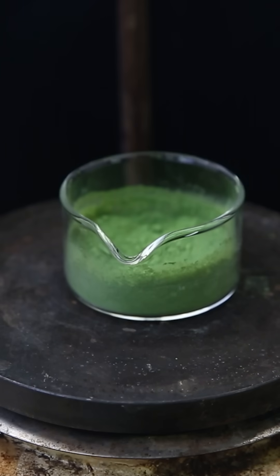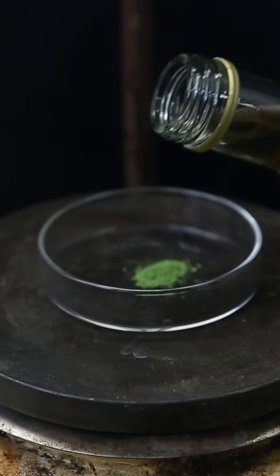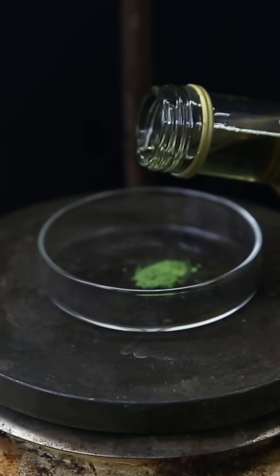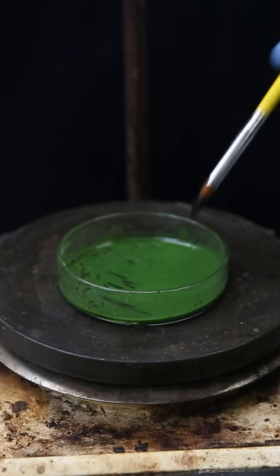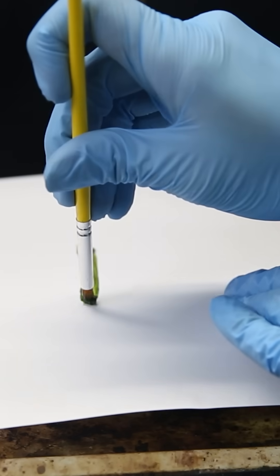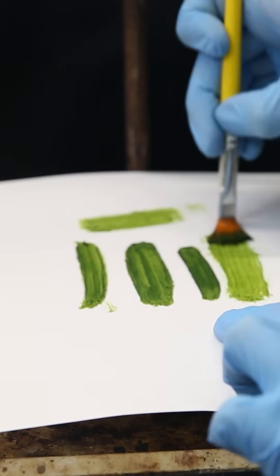This powder can be used to make various types of green paint, traditionally using some kind of oil like walnut oil. However, it has to be very finely powdered for optimal results. After mixing it with walnut oil, I can use it to paint on some paper, giving a very natural green color.